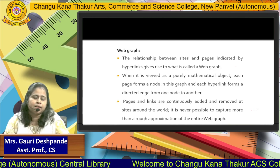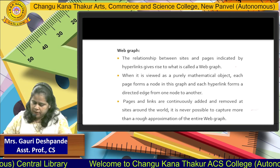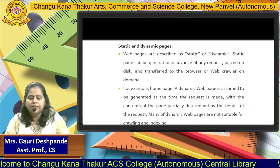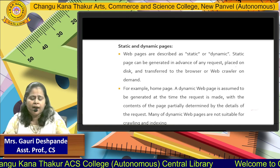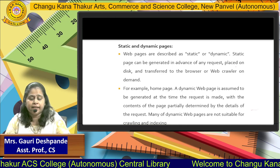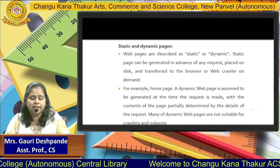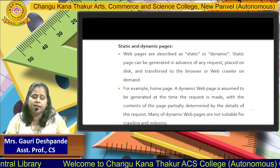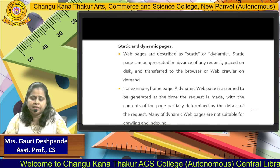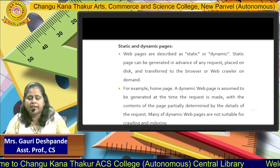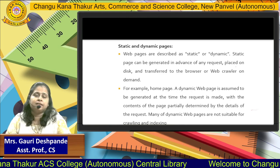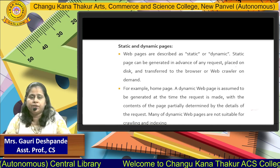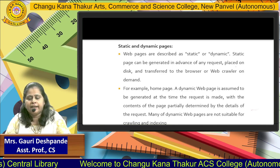That whole structure is known as the web graph. Next are static and dynamic pages. A static web page means pages that we generate or design in advance. At runtime, if a user wants to design their own page, that is a dynamic page. For example, historical websites are examples of static web pages, and commercial applications or e-commerce websites like Amazon are dynamic websites.